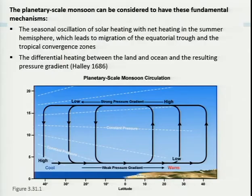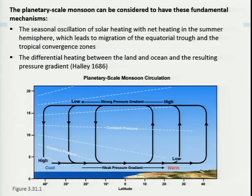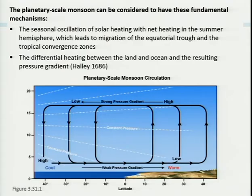What drives the monsoon? We've already identified some of the key pieces. The first is the seasonal insolation of solar heating — the displacement of net heating into the summer hemisphere and the migration of the equatorial trough following that solar heating. The second component, which Halley identified, is the differential heating between land and ocean. The heat capacity of land and ocean is different, so under the same heating land warms up much more and drives a pressure gradient. In this simple schematic, warm conditions over land produce low pressure, cooler conditions over ocean, and a pressure gradient drives an onshore flow that then ascends — forming the upward branch of the monsoon circulation.